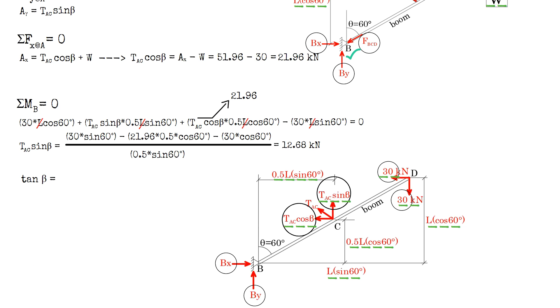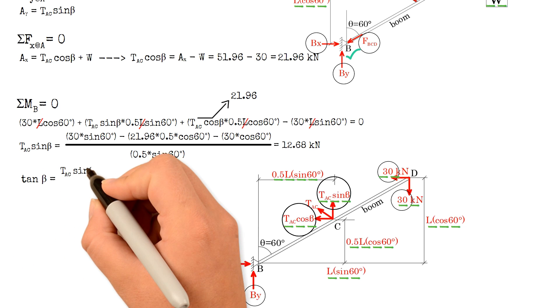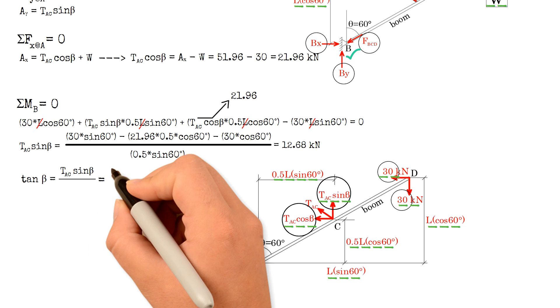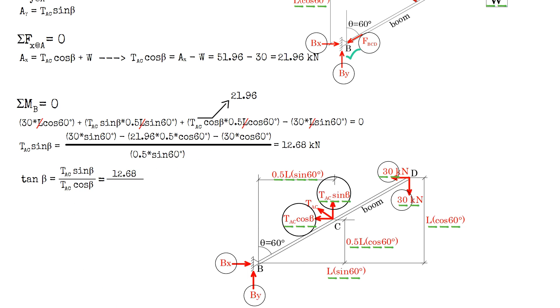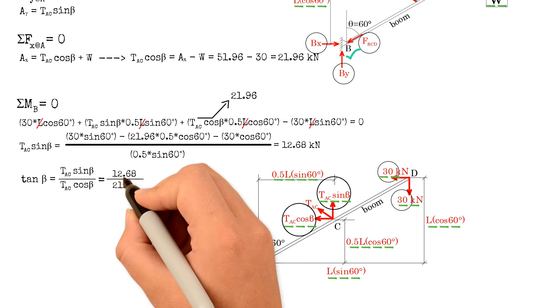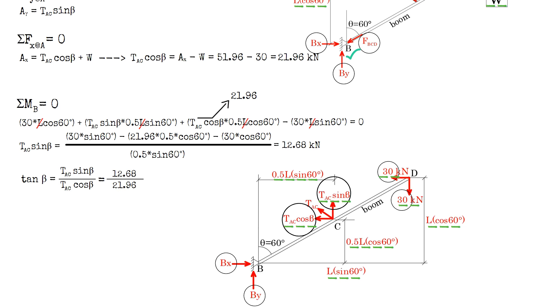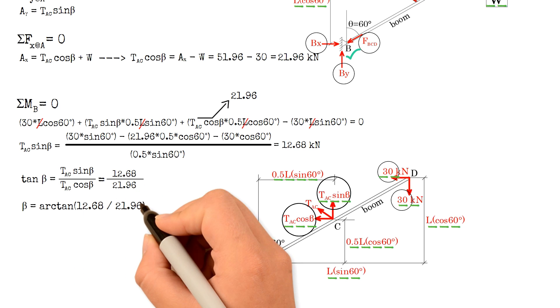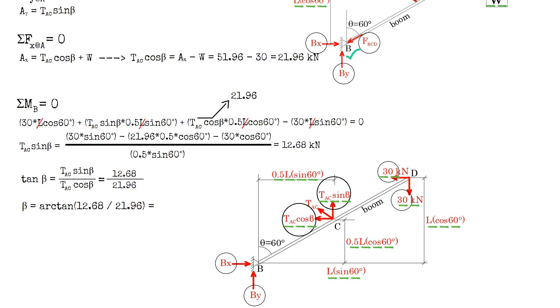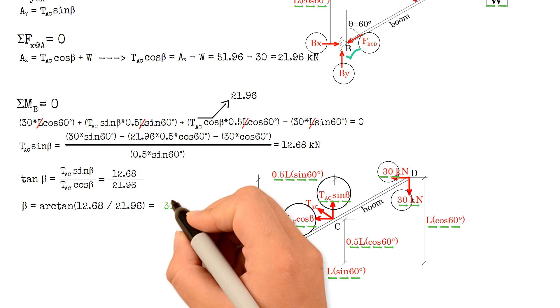We know that tangent of beta equals tension AC times sine of beta, which is 12.68 kN, divided by tension AC times cosine of beta, which is 21.96 kN. Therefore beta equals arctan(12.68 / 21.96), giving us a value of 30 degrees.